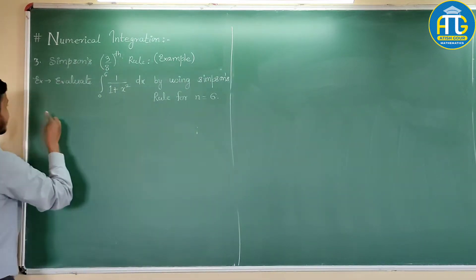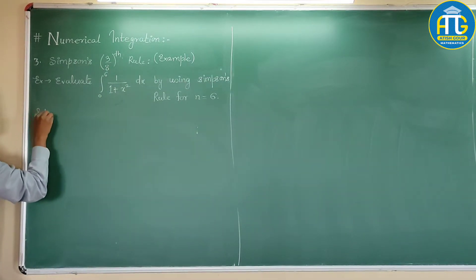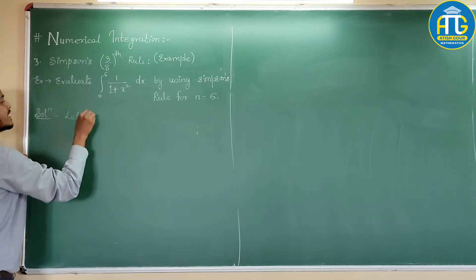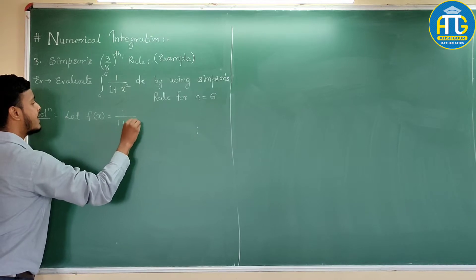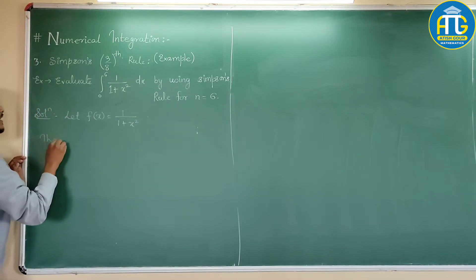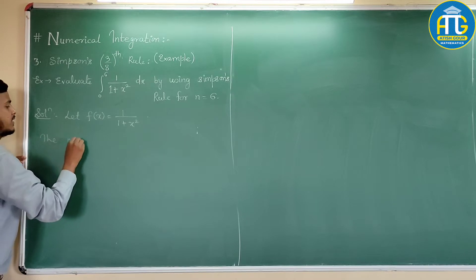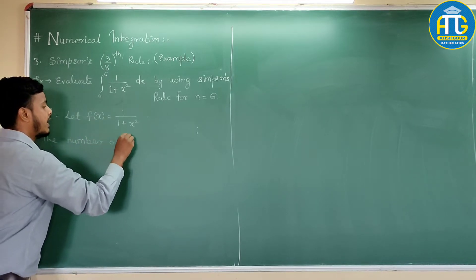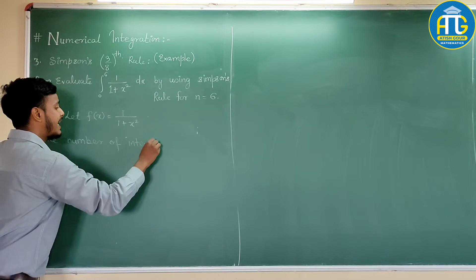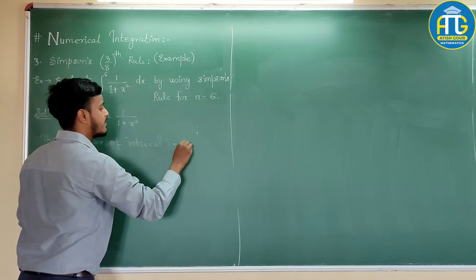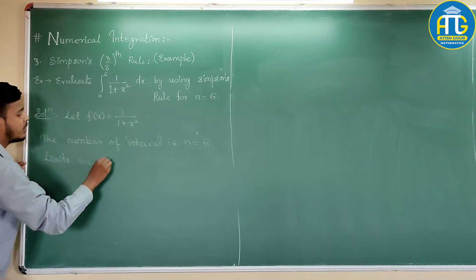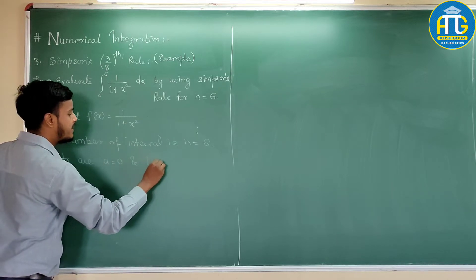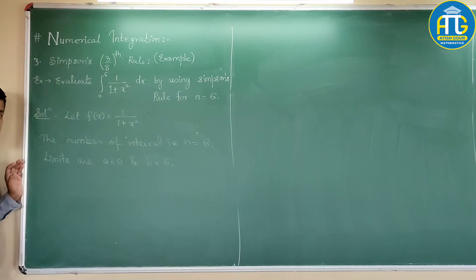So, let us start with this. So, we are given here f of x equals 1 upon 1 plus x squared. The number of interval n equals 6. What are the limits? The limits are lower limit a equals 0 and b equals 6.